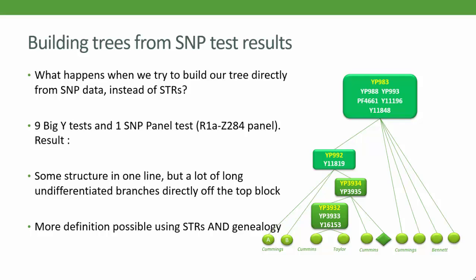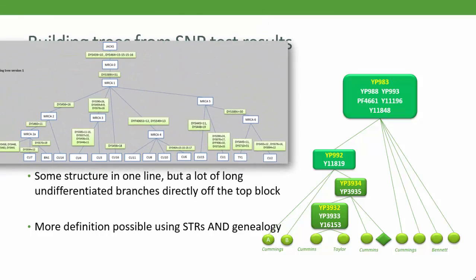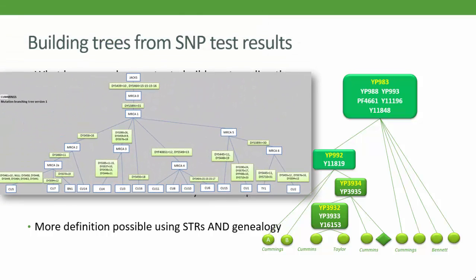Bringing in any genealogical information you have could make an even more accurate working tree for your lineage. So, just to remind us what that earlier STR-based tree looked like and compare it with a SNP tree — they are capturing the same group in different ways. So how can we bring all this together, using SNPs, STRs and the known genealogy? Let's have a go at building the fullest tree we can for the Cummings, fusing all this data.